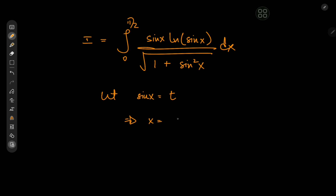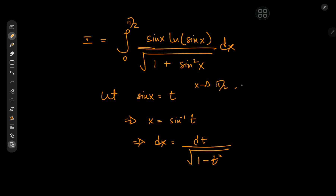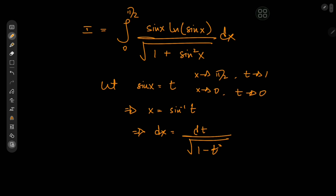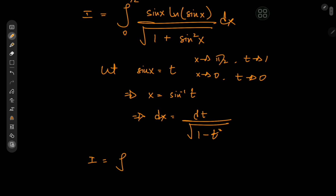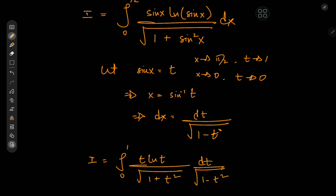This implies that x equals arcsin(t), which implies that dx equals dt divided by root(1 − t²). As for the limits: as x approaches π/2, t approaches 1, and as x approaches 0, t approaches 0. So the target integral I is now the integral from 0 to 1 of t times log(t) divided by root(1 + t²), times dt divided by root(1 − t²).